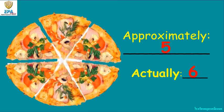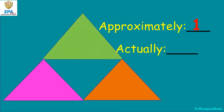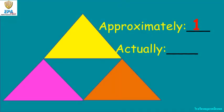Approximately we have five slices, but actually we have six slices. How about this triangle — how many triangles do you see? Approximately you can only see one triangle, but if we count: one, two, three, four — we have four triangles.